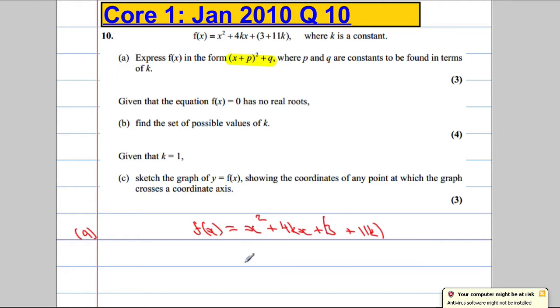Okie dokie. Lovely. Now, when we complete the square, coefficient of x squared is 1 already, so that's great. I'm just going to worry about this part I've underlined in green. And I'm going to write x plus, and normally what we do is we half the coefficient of x here. Half of 4k is 2k.